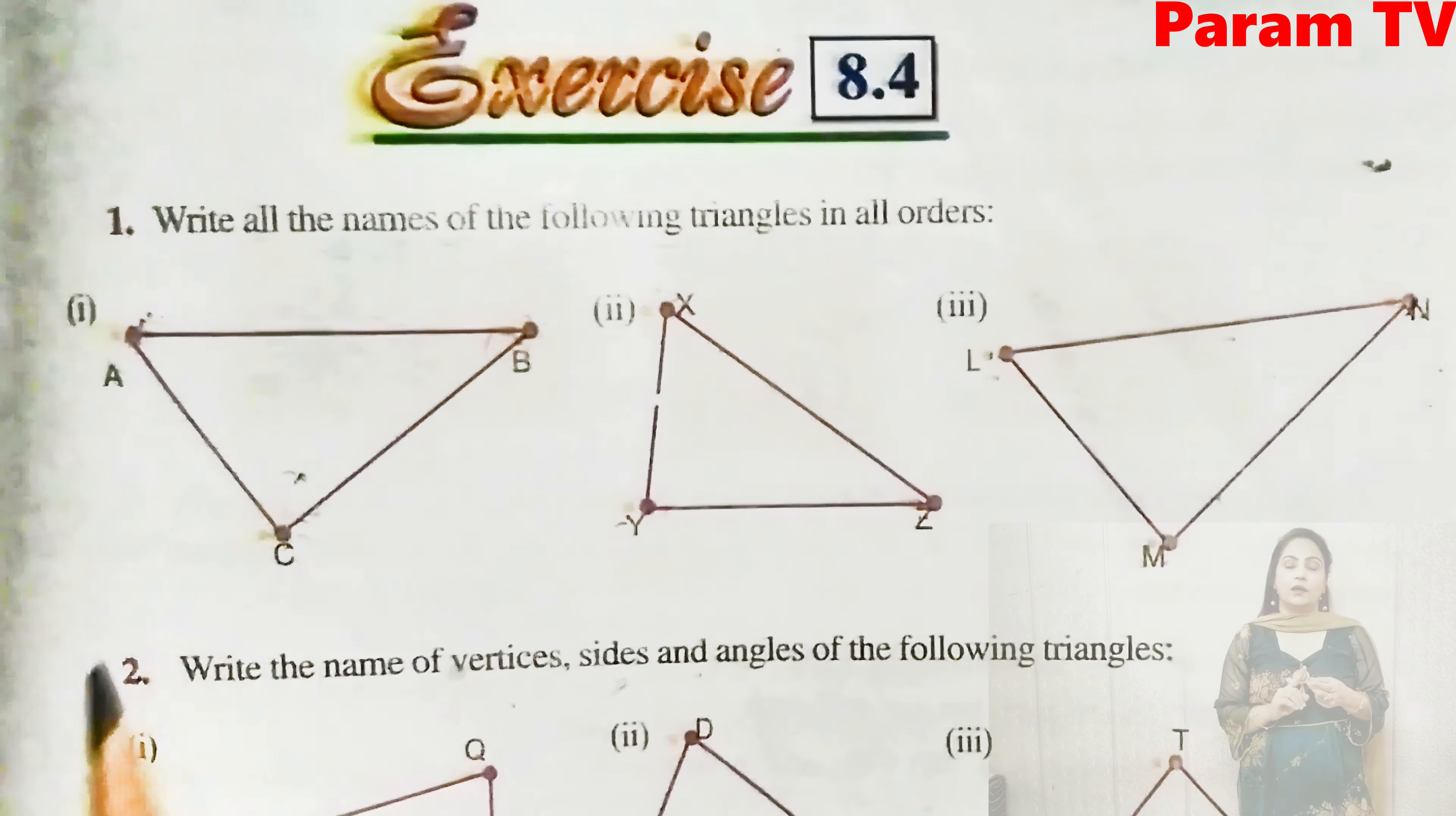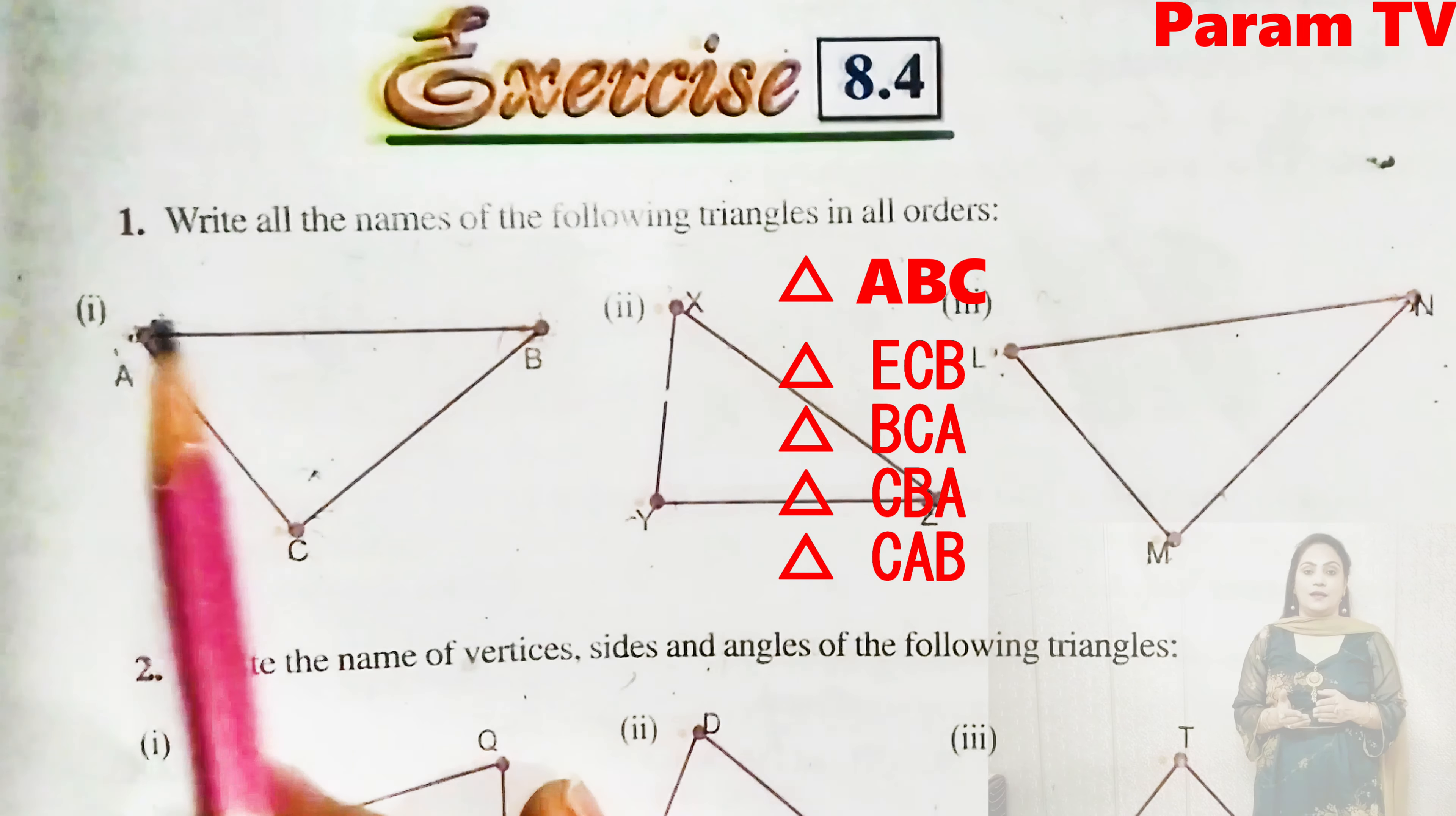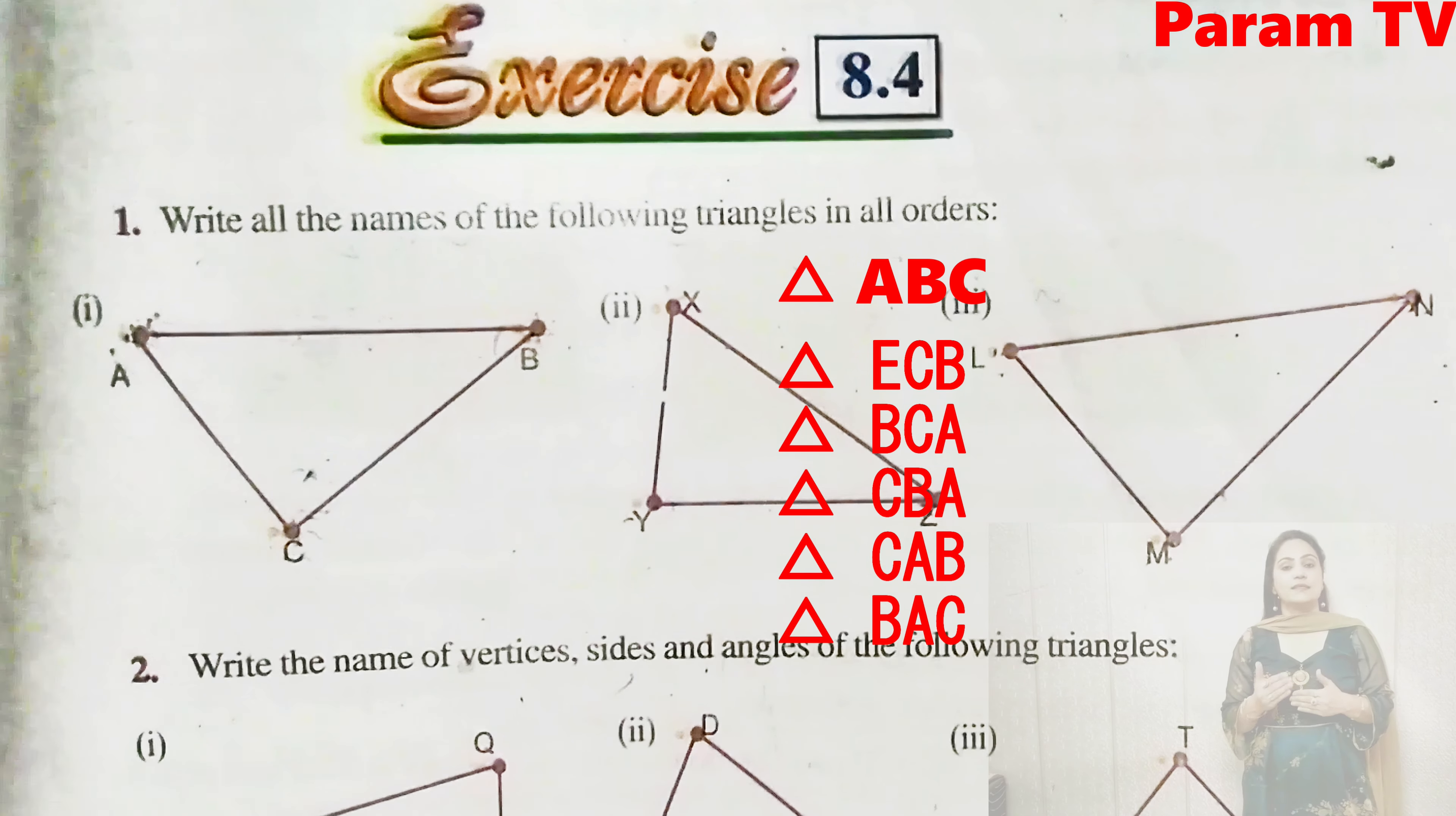See who are they? ABC, ACB, BCA, CBA, CAB, BAC. In six possible ways you can write the name.